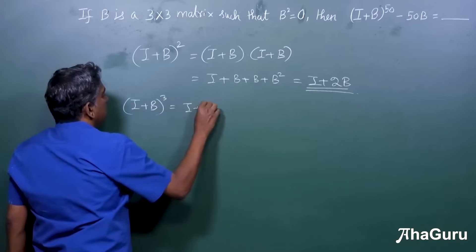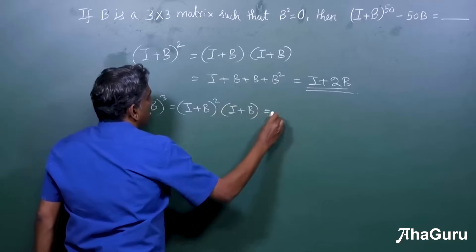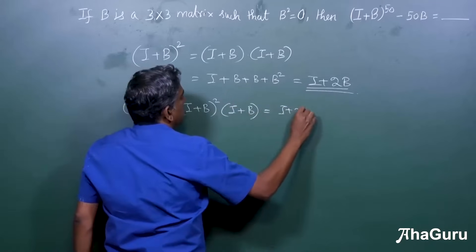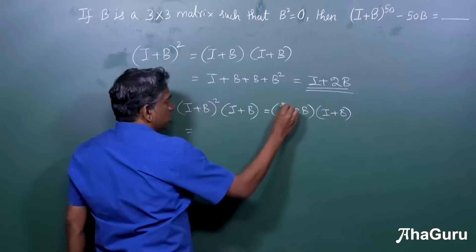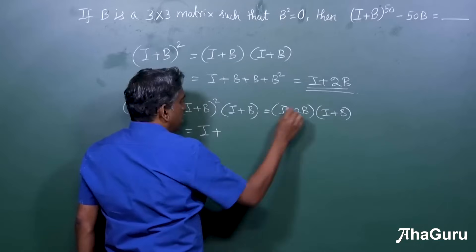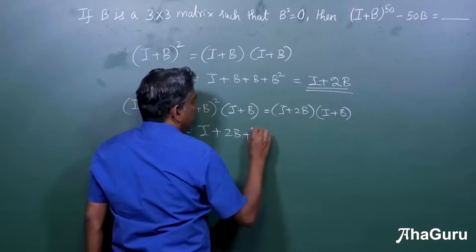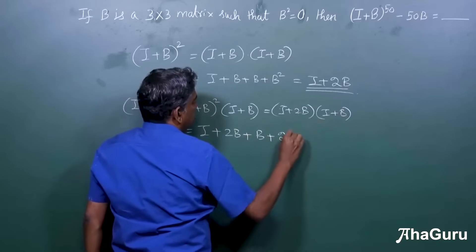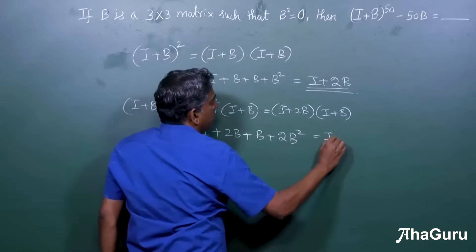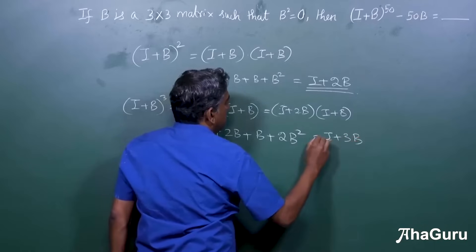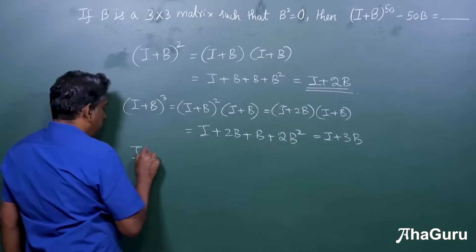...will be (I + B) squared times (I + B), so this is (I + 2B) times (I + B). Using the distributive property: I times I is I, 2B times I is 2B, I times B is B, and 2B times B is 2B squared. But B squared is null, so this simply becomes I plus 3B.